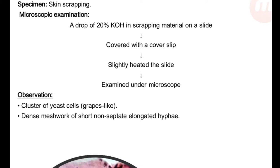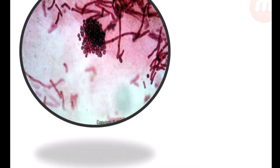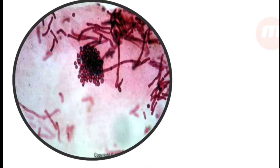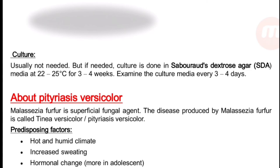For microscopic examination: a drop of 20% potassium hydroxide is placed on the scraping material on a slide, covered with a cover slip, slightly heated, and examined under the microscope. The observation shows a cluster of yeast cells — a grape-like appearance. In the figure, the middle portion shows the cluster of yeast cells, and there is a dense meshwork of short non-septate elongated hyphae on the sides.